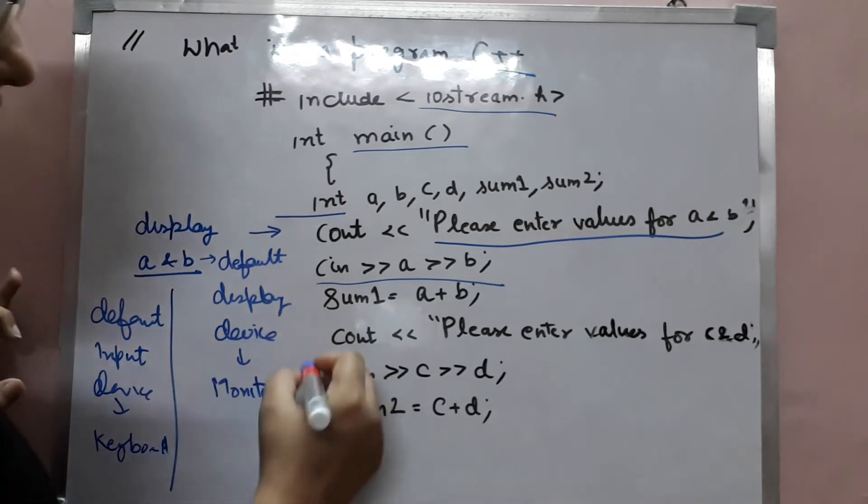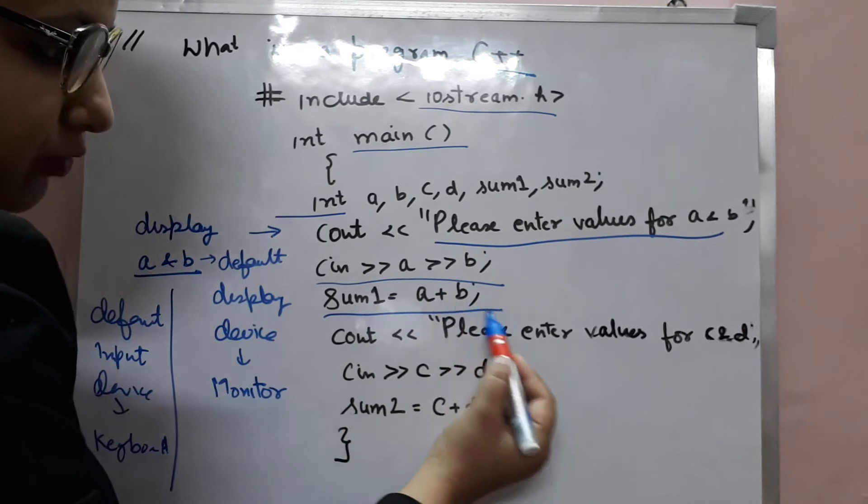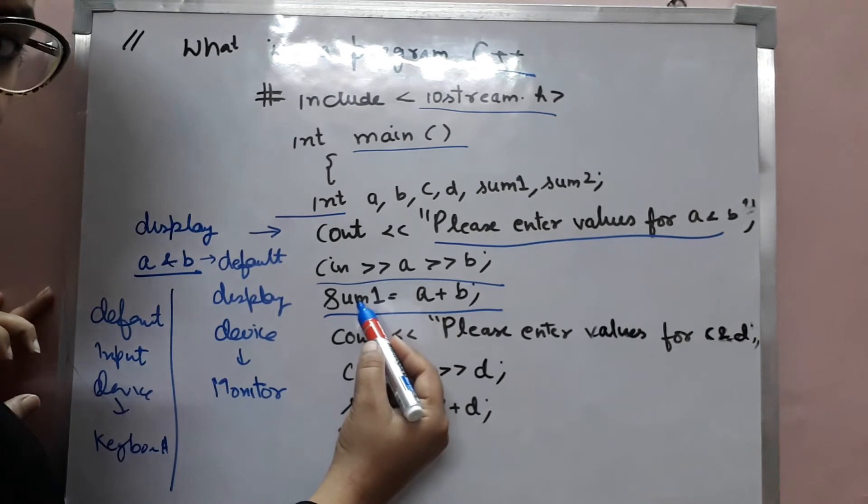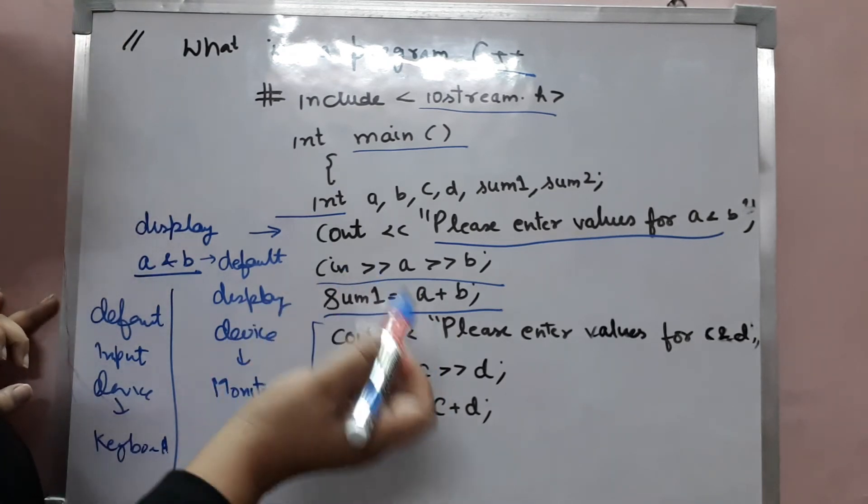Similarly, in this statement, it is calculating sum of two variables, that is A and B, and giving this value to variable sum1. And the same instruction calls here as well.